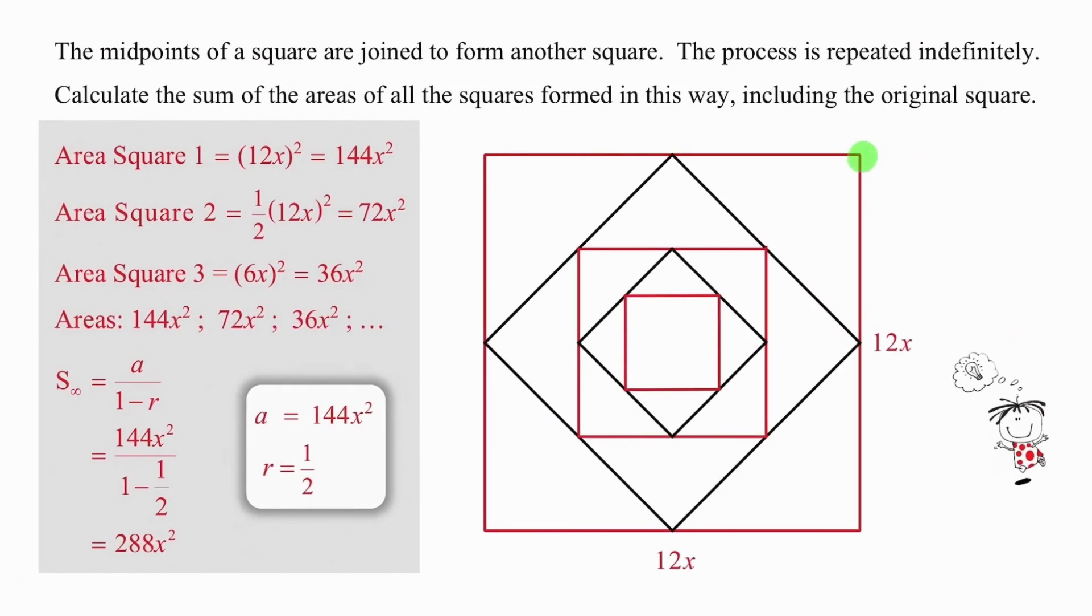So the first square we can write down by inspection without showing any working or doing much thinking will be 12x by 12x, which gives us 144x squared for that first area. The second square may look difficult, but actually, if you keep your head, the diagonal of the second square is 12x, and obviously diagonals are equal in both directions. Diagonals are 12x, and the diagonal product divided by 2 gives the area of a square. So for the second area, we are simply going to make use of the fact that we are taking half of 12x squared equal to 72x squared.